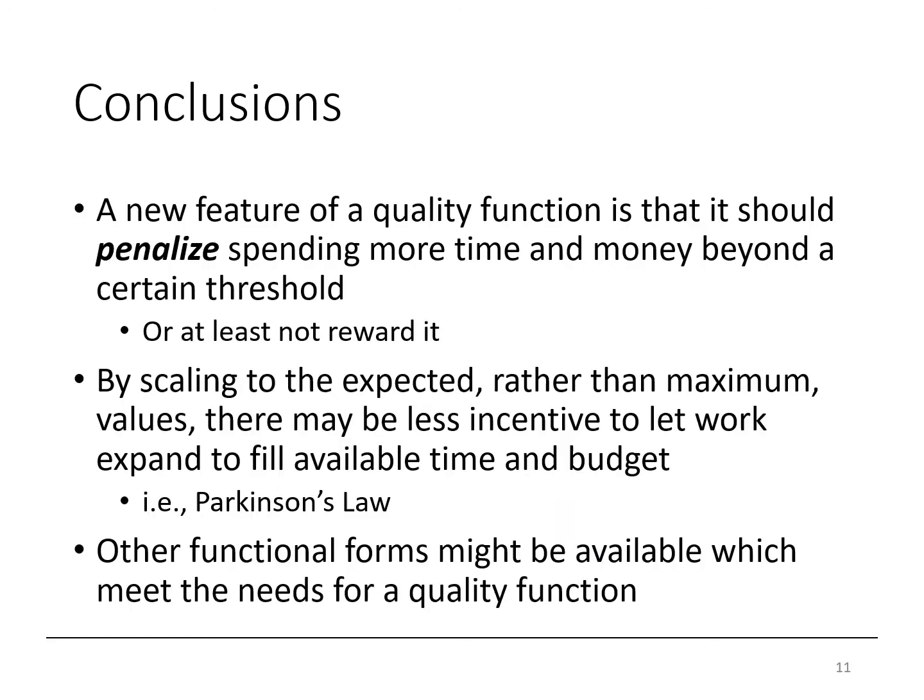In terms of conclusions, we found that perhaps a new criterion for what makes a good quality function is that it should penalize spending more time and money beyond a certain threshold, or at least the function shouldn't reward spending more time and money. Also, by scaling our function to the expected rather than maximum values of time and cost, there may be less incentive to let work expand to fill the available time and budget — a phenomenon in project management known as Parkinson's law. Finally, these are preliminary research results, and much more research needs to be done in the area of quality measurement, especially related to project activities.